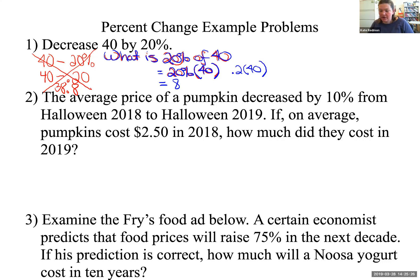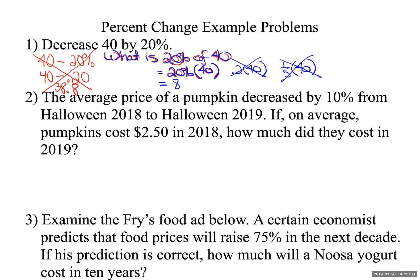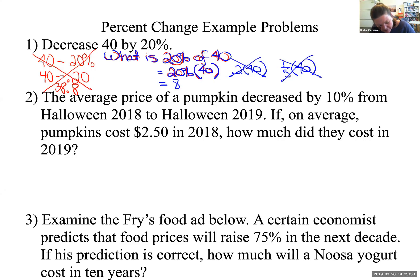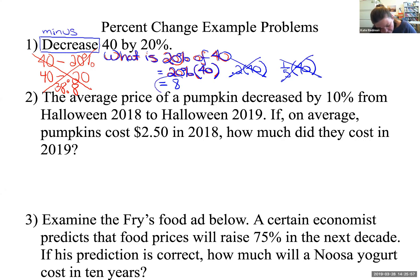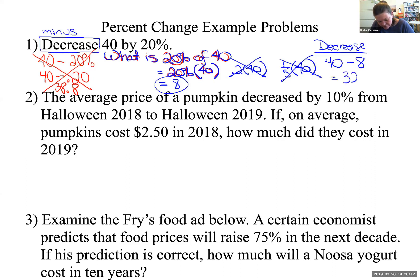Now that I know 20% of 40 is 8, I can do the decrease. The word 'decrease' means minus. So I take 40 and subtract that 8, getting 32. That's the correct answer. This skill would typically be embedded in a word problem on the GED, not presented so straightforwardly.